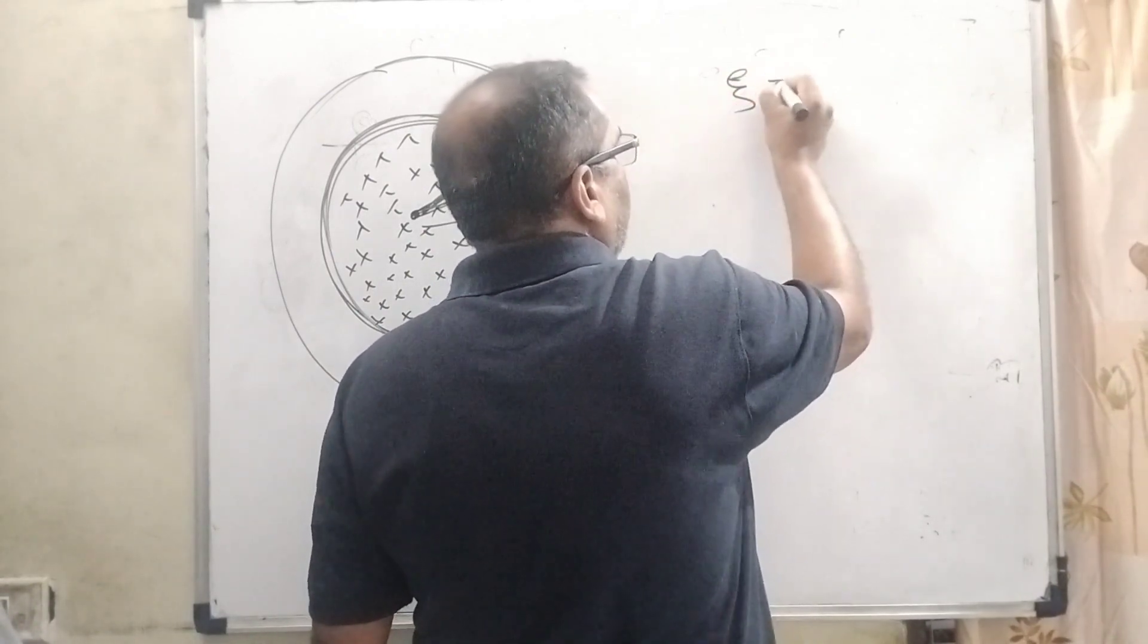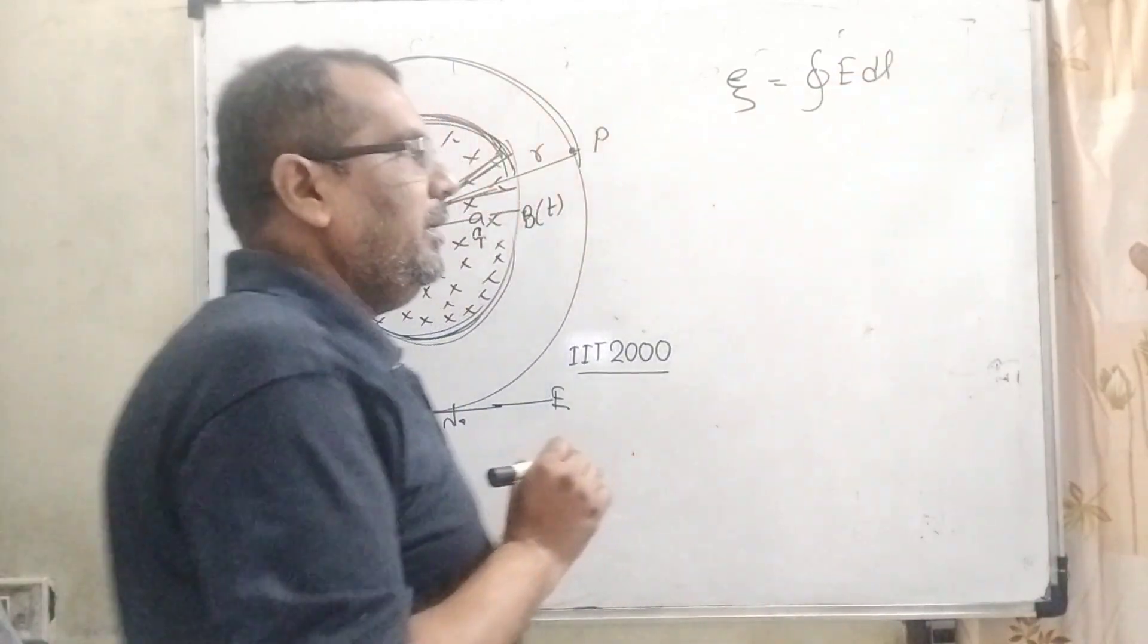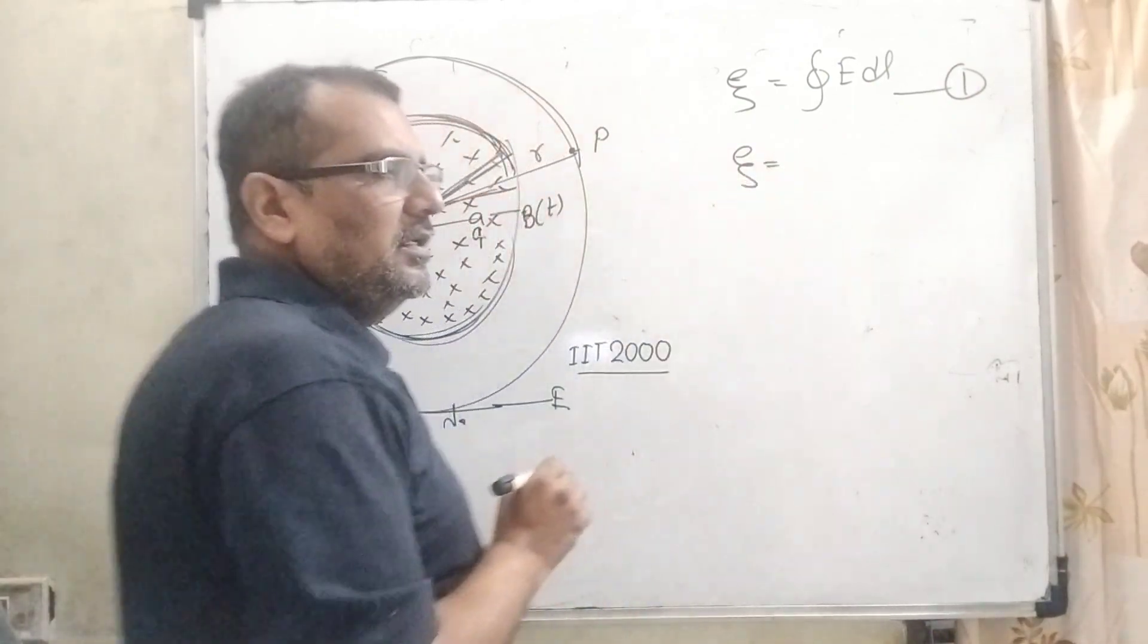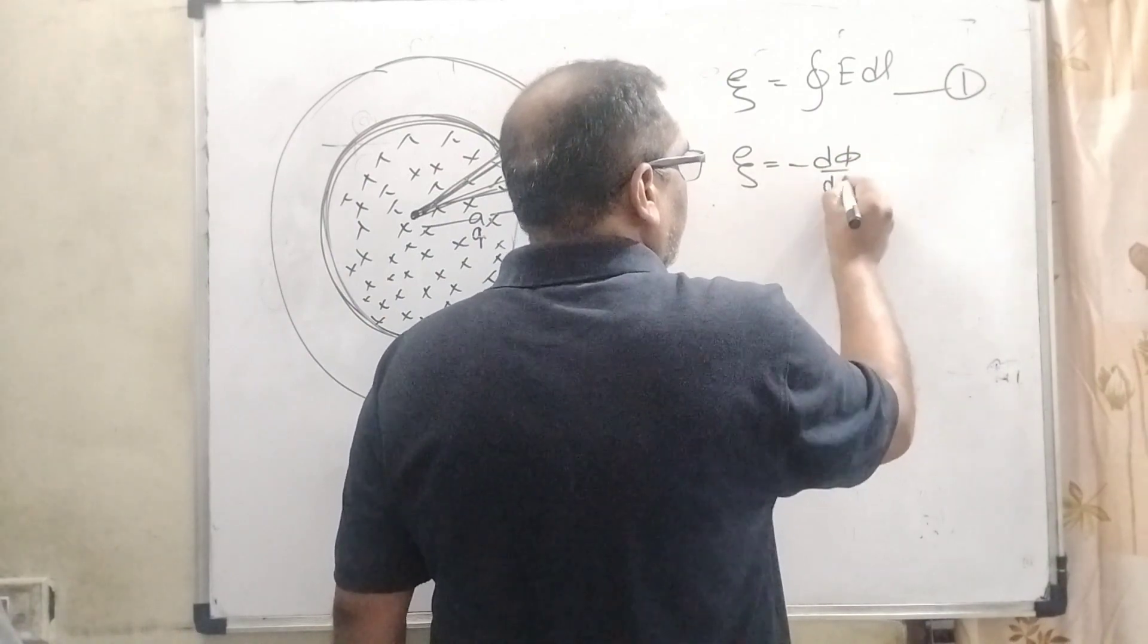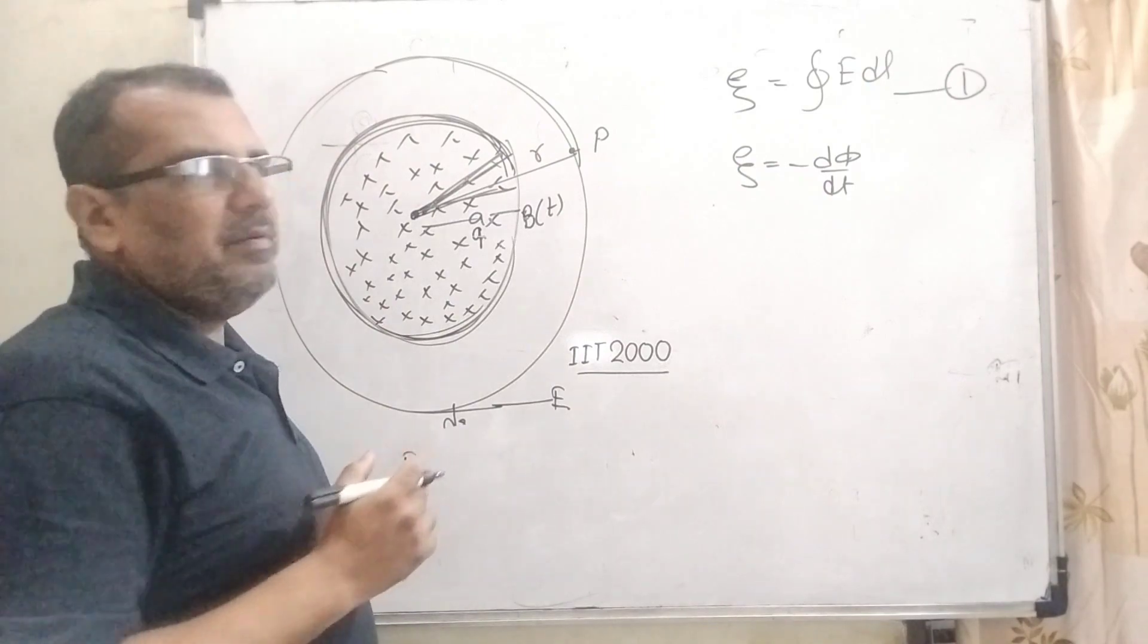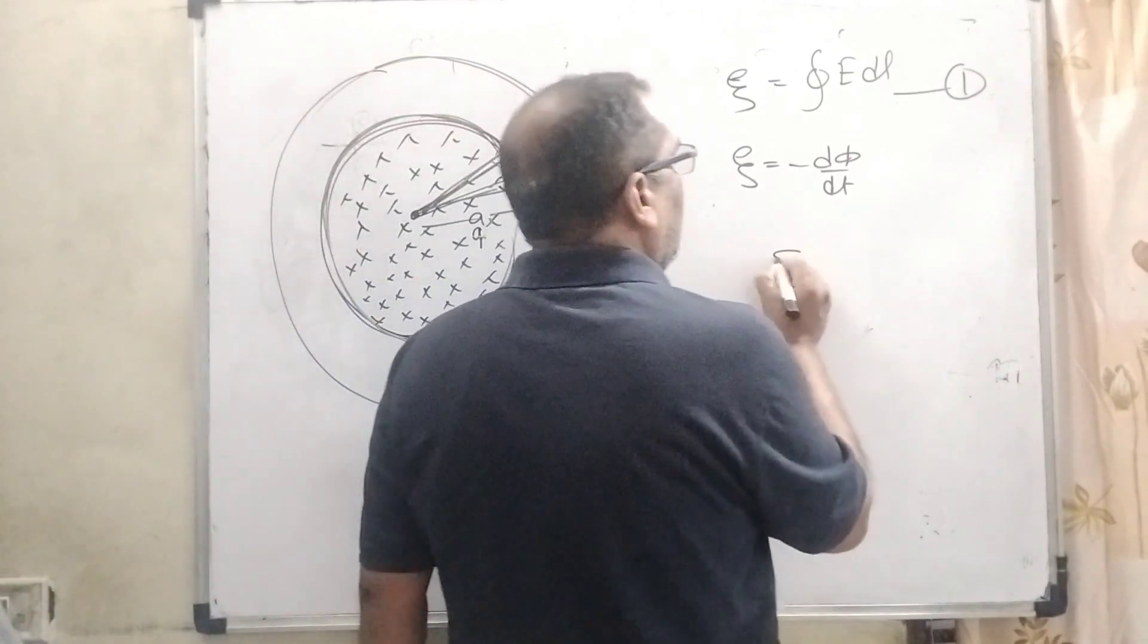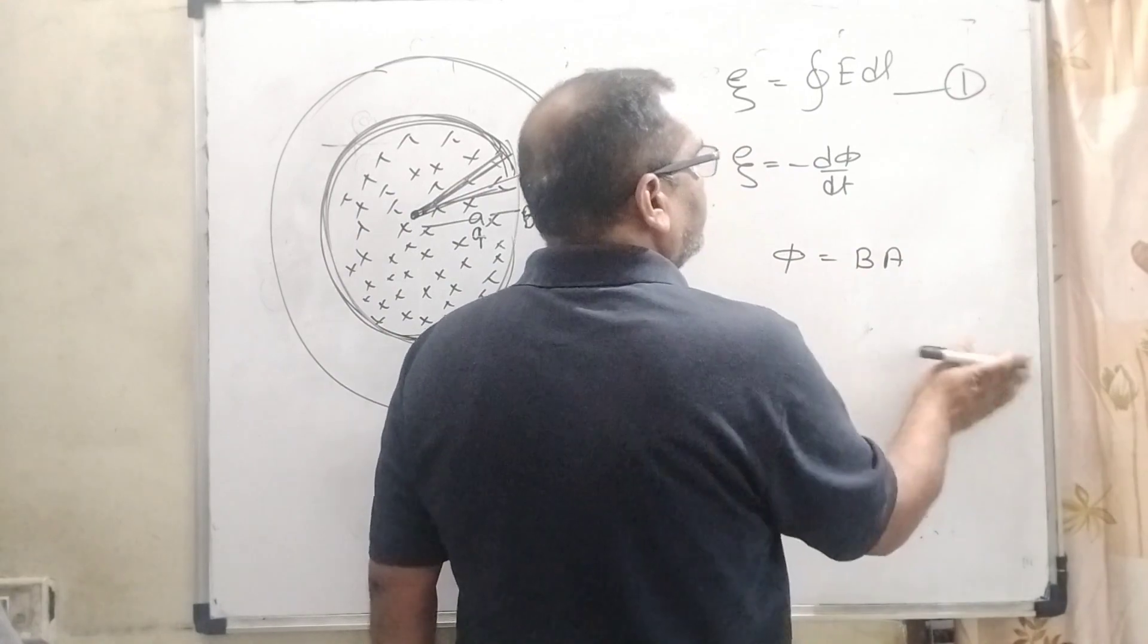The induced EMF equals the line integral of electric field ∮E·dl. Let us consider this the first equation. Another relation for induced EMF is minus dφ/dt. You all know that induced EMF is minus dφ/dt, where the minus sign shows it opposes the change of flux. And what is the formula for flux? That is φ = B·A.